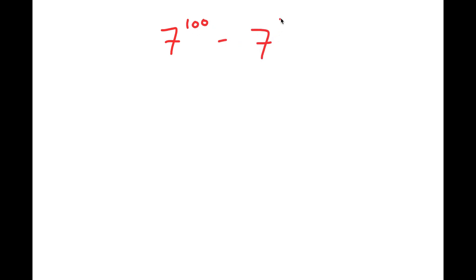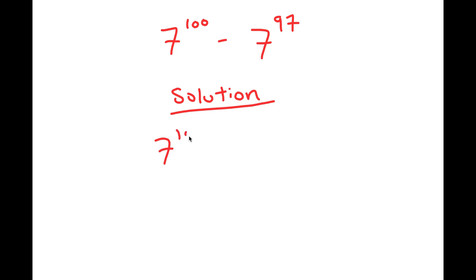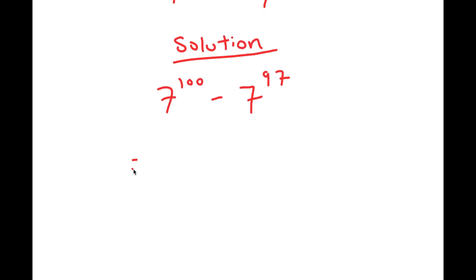In this video, I'm going to be solving the problem 7 to the power of 100 minus 7 to the power of 97. For my solution, I'm going to rewrite my problem right here. The first thing I'm going to do is rewrite 100 as 97 plus 3. So I get 7 to the power of 97 plus 3, minus 7 to the power of 97.